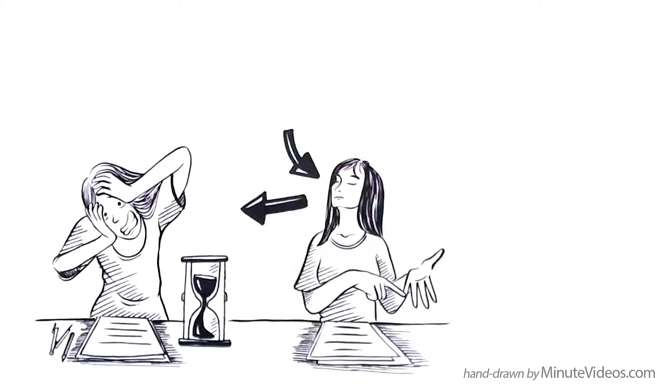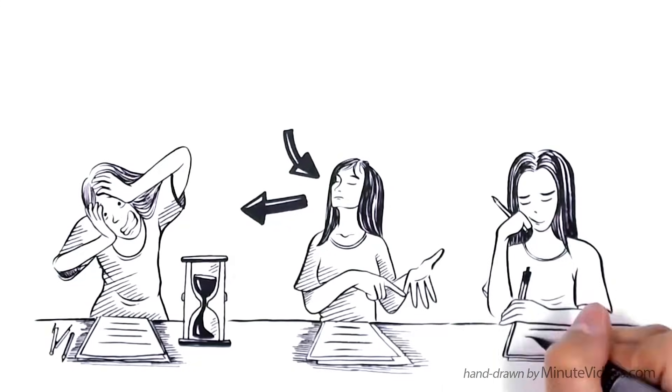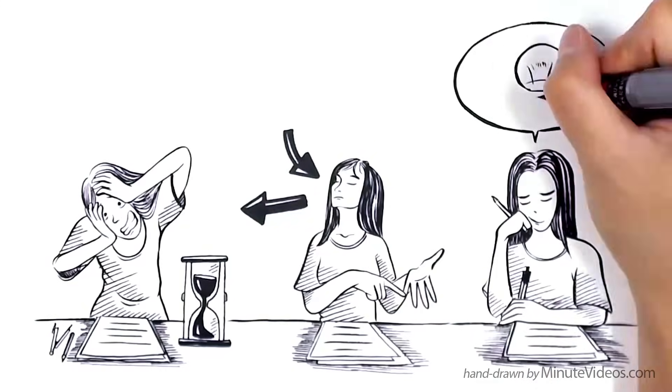Then, breathe out through your mouth. Again, counting to 5. Repeat that for 1 to 5 minutes, and your body will relax, and your brain can switch from protection mode back to a learning mode.